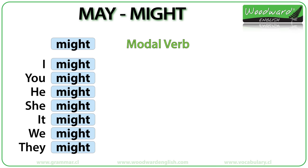With modal verbs, there's only one form for every subject pronoun. For example, with the modal verb might, we say: I might, you might, he might, she might, it might, we might, they might.